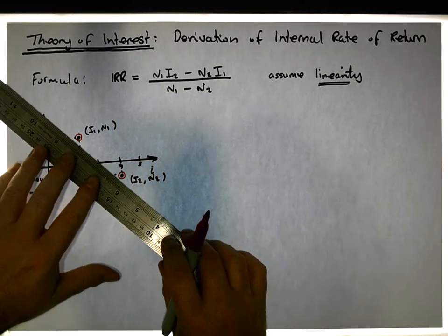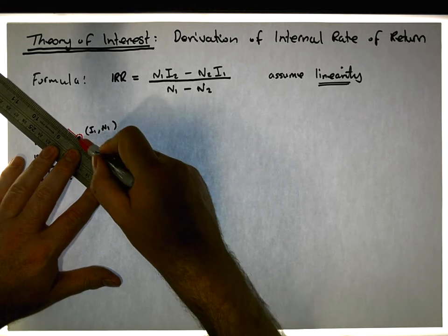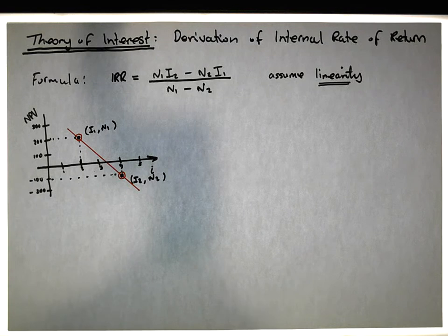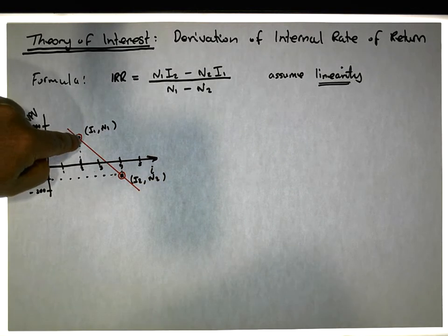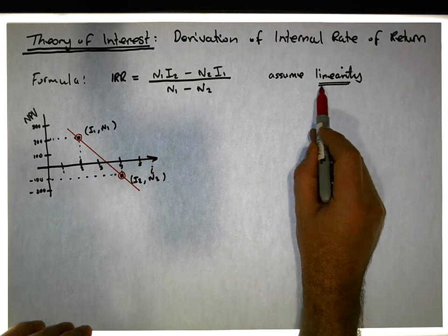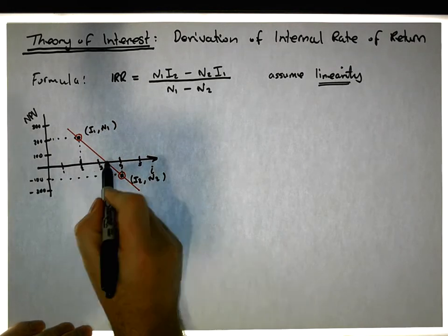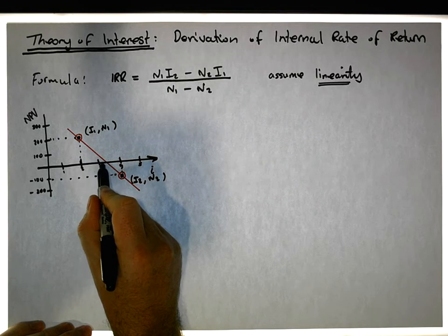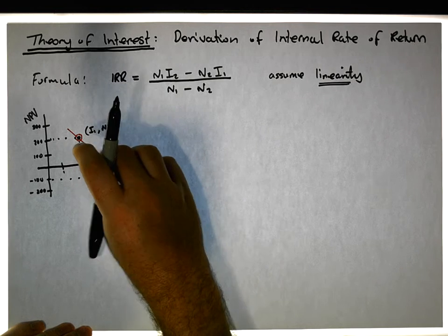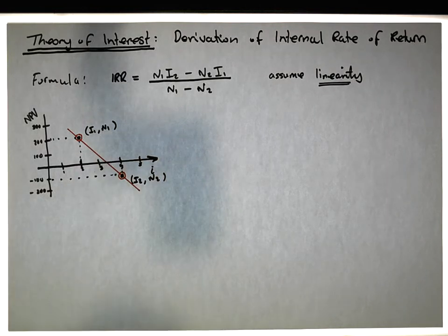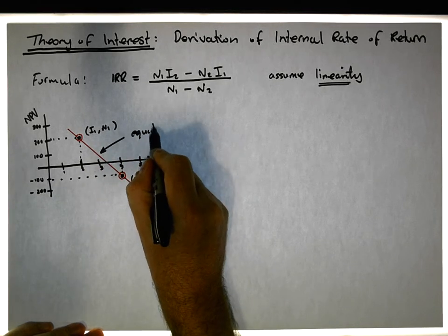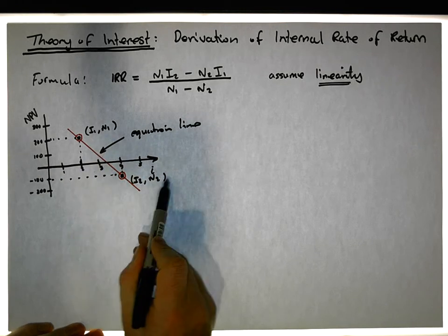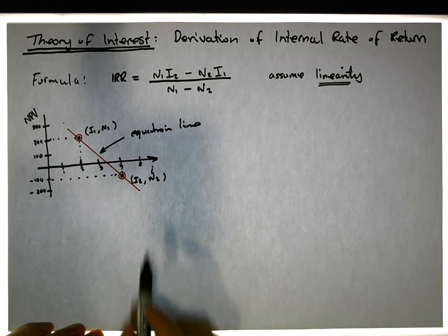We can draw a straight line through these two points — this is where we're assuming linearity. The real relationship is more curved as interest rates increase, but the goal is to choose two interest rates that are very, very close together so that effectively all we have between them is a straight line. Now, if we knew the equation of this line — the relationship between these two points — we could solve it for when the net present value equals zero.